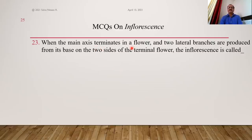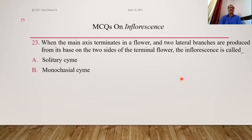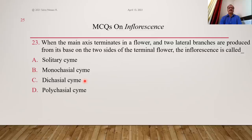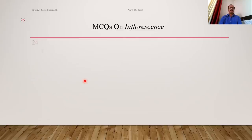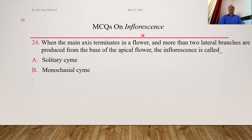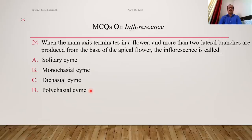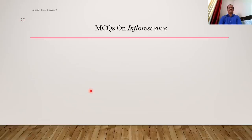When the main axis terminates in a flower and two lateral branches — not one but two — are produced from its base on two sides of the terminal flower, it is called dichasial cyme. Di means two. C is the answer. When the main axis terminates in a flower and more than two lateral branches are produced from its base, it is called polychasial cyme — poly means many. Option D is the right answer.